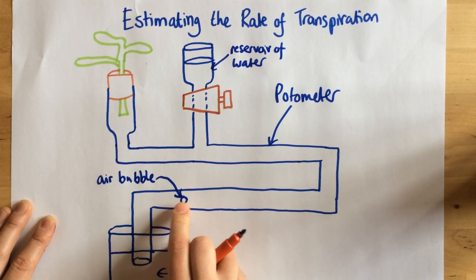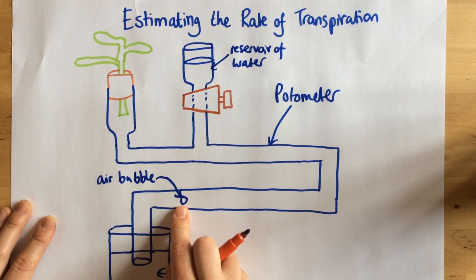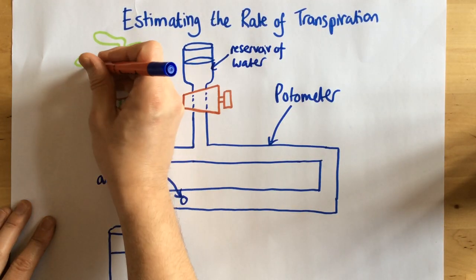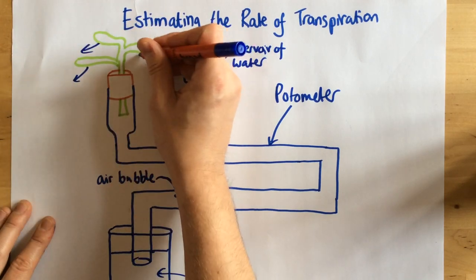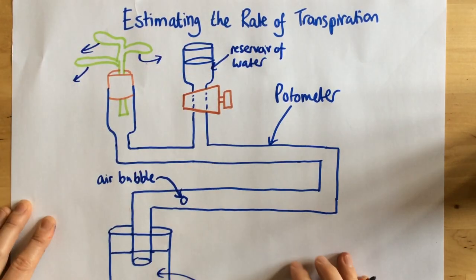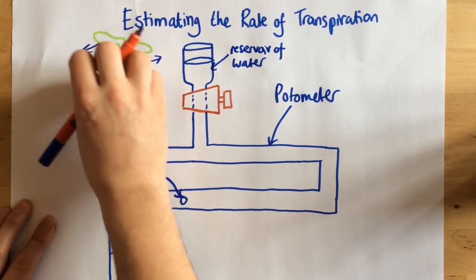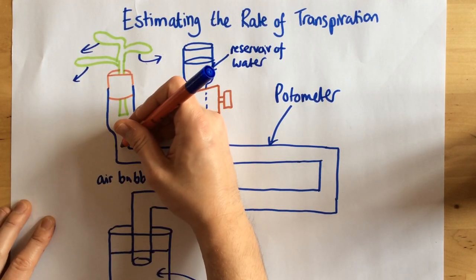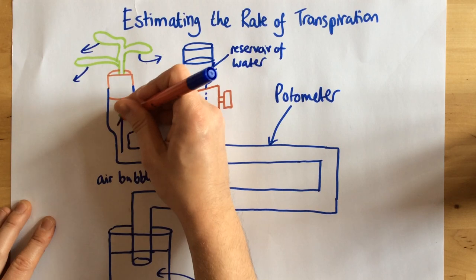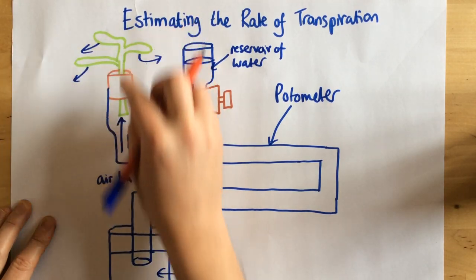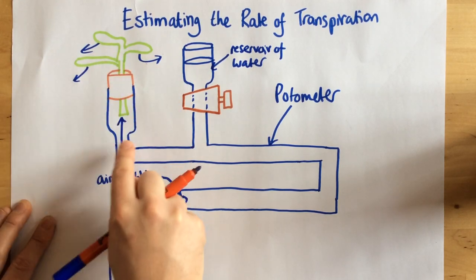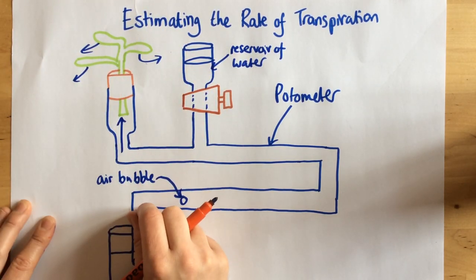There's one air bubble and this air bubble is extremely important as we'll see in a minute. So what happens is during transpiration, water is lost from the leaves. Now, as water is being lost from the leaves, it draws up water. So water is drawn up into the plant because we've got a constant transpiration stream going on. So water gets drawn up through to replace the water that's lost from the leaves.